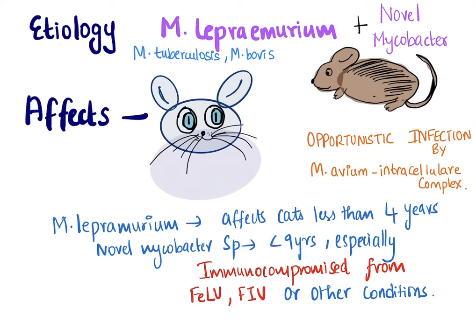There could be a reason for this because cats like to hunt, and whenever they hunt an infected rodent they can contract this infection. There are two types of mycobacterium infection: one is leprosy syndrome, and the other one is opportunistic mycobacteriosis. We should be able to differentiate between these two conditions.